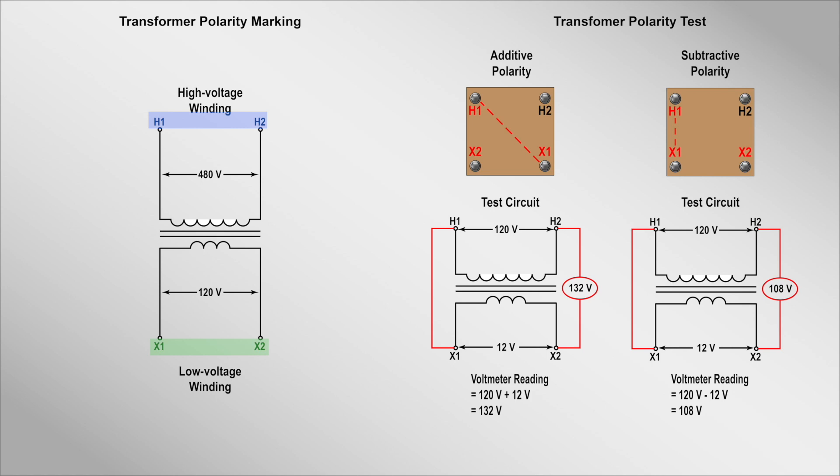By convention, H1 and X1 have the same polarity. This means that when H1 is instantaneously positive, X1 is also instantaneously positive. Transformers can either have additive or subtractive polarity. What this refers to is the location of the H and X terminals as they are brought out of the transformer's case. Looking at the drawing, when X1 is diagonally from H1, the transformer is said to have additive polarity, and when X1 is directly across from H1, then the transformer has subtractive polarity.